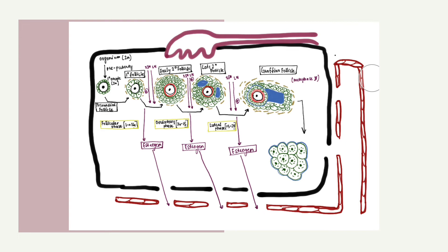At sexual maturity, two hormones produced by the pituitary gland, FSH, which is the follicular stimulating hormone, and luteinizing hormone, cause these primordial follicles to develop.